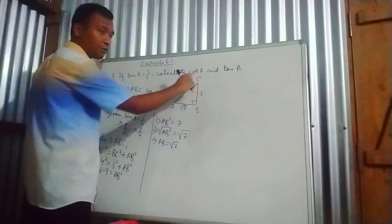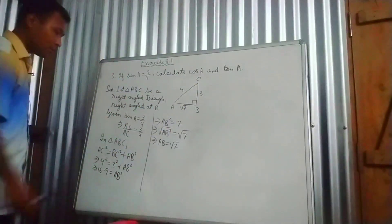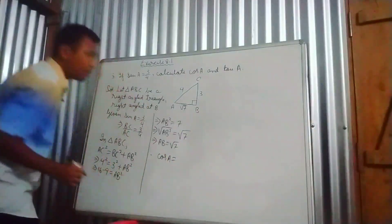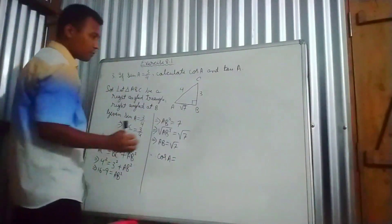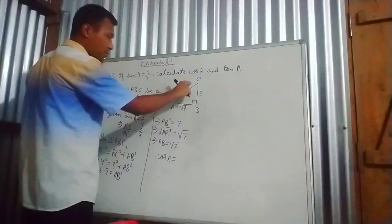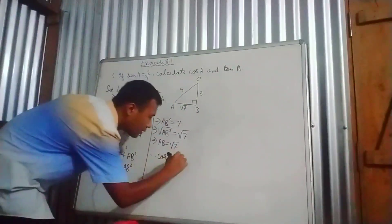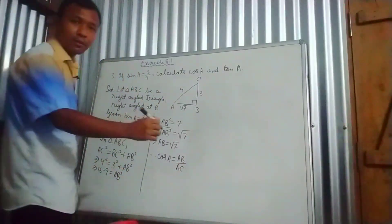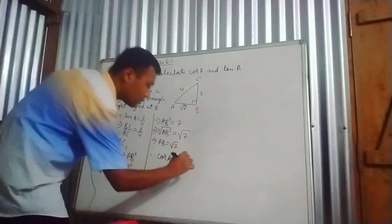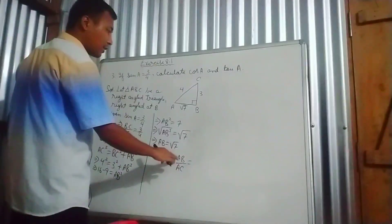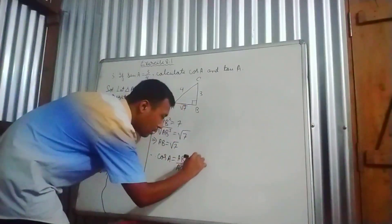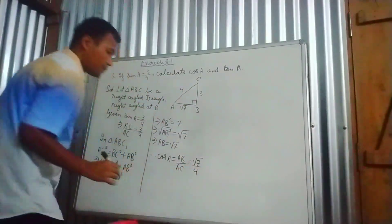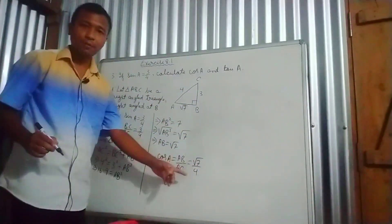Now I can find out cos A. Therefore cos A is equal to base by hypotenuse, which is AB by AC. AB is root 7 and AC is 4. So cos A is root 7 by 4.